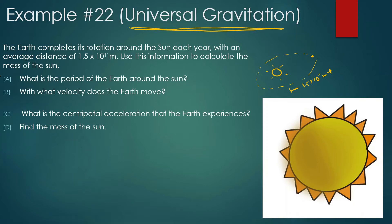Part A: What is the period of the Earth around the Sun? It says average because we know it's an elliptical orbit. We should know it takes one year to go around the Sun, which is 365 days, or more specifically 365.256 days. That's 365 times 24 hours, times 60 minutes, times 60 seconds, giving us 31,536,000 seconds. That's the period.